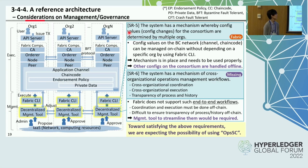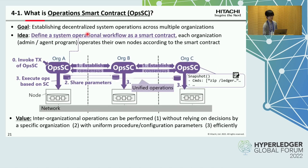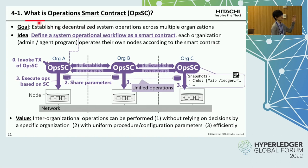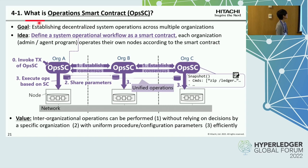To satisfy the above requirements, we are exploring the potential use of OPSSC. OPSSC is Operational Smart Contract, which we proposed. The goal is to establish decentralized system management across multiple organizations. The primary idea is to define a system operational workflow as a smart contract, and each organization's admin or agent program operates their own nodes according to the smart contract. As a result, the operations are unified across multiple organizations.